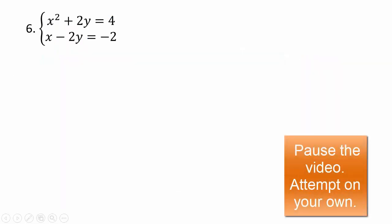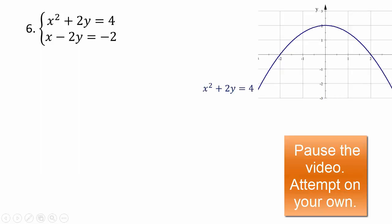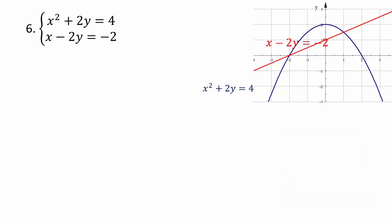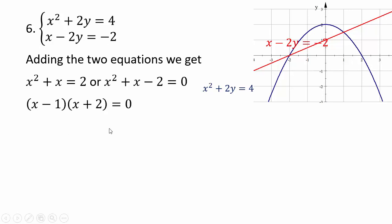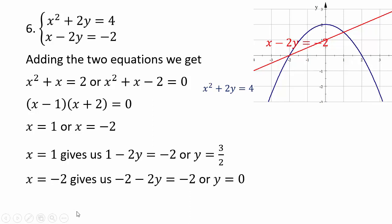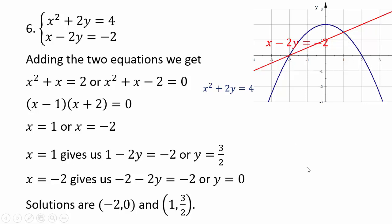Try this one on your own. We know x squared plus 2y equals 4 is a parabola, and then you have the line — so again, two points of intersection. You don't have to use substitution; you can use elimination. In this case, if you add the two equations, you end up with a quadratic in x — use the quadratic formula, then use the x values to get your y coordinates by plugging into either equation. The solutions are (-2, 0) and (1, 3/2) — you can even see it from the graph. So you can solve nonlinear systems in similar fashion using elimination or substitution depending on which is appropriate.